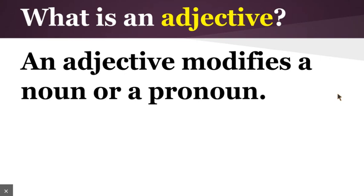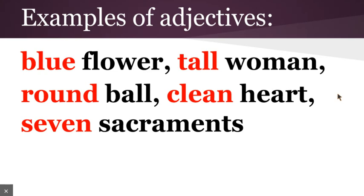But we haven't talked about pronouns yet and we're not going to worry about them yet. We're going to talk about them later. Some examples of adjectives would be words like blue, tall, round, clean, and seven.